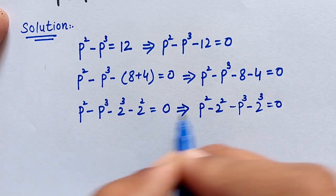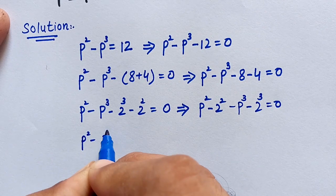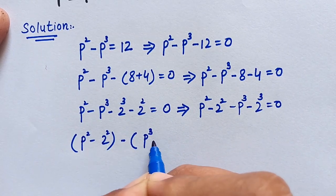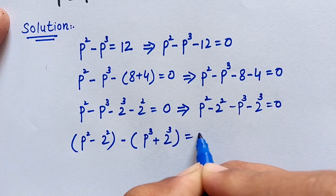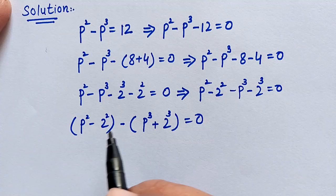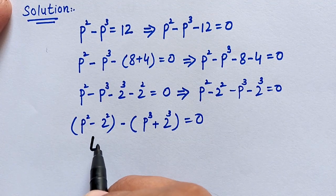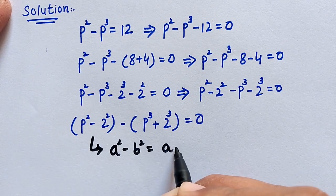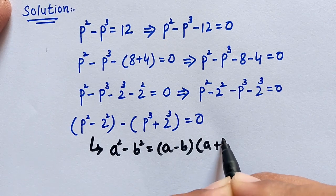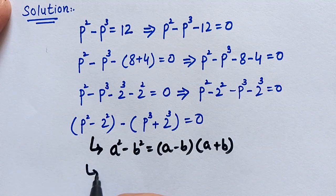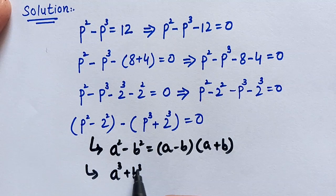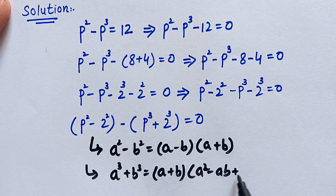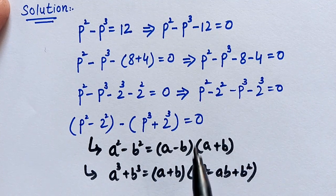Now p to the power of 3 minus 2 to the power of 3, which is equal to 0. To solve this, we have to use two identities. For the first part we use the difference of squares identity: a squared minus b squared equals a minus b times a plus b. For the second part we use the sum of cubes identity: a to the power of 3 plus b to the power of 3 equals a plus b times a squared minus ab plus b squared.